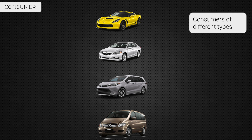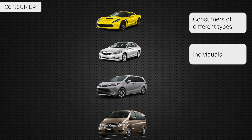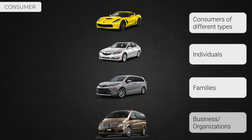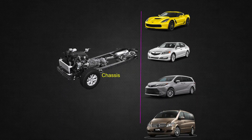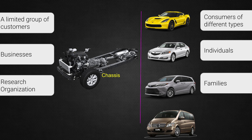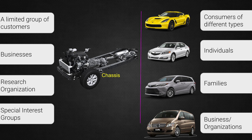Now let's take a look at the final product. Consumers of different types would be interested in buying a sports car. Various individuals worldwide would love to have a sedan. Families of various sizes would love to have the van, and organizations and businesses will be using the van to transport goods from one place to another. The scope and scale of consumers for a final product varies greatly compared to the technology being used to generate that product.